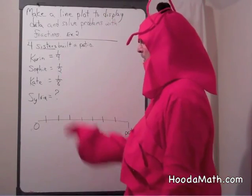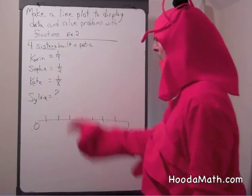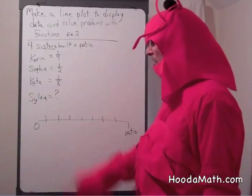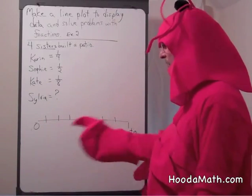Karin built one quarter, Sophie one half of the patio, Kate one eighth. We don't know how much Sylvia did, but she finished the rest.